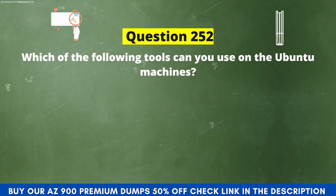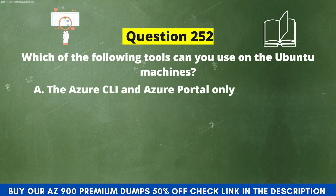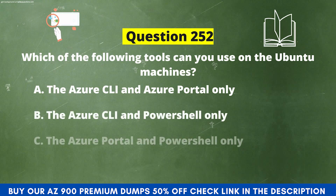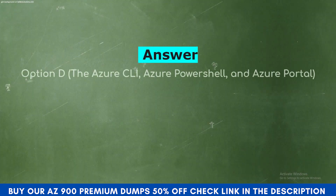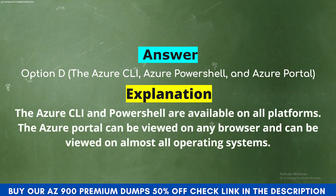Next question. Which of the following tools can you use on Ubuntu machines? Option A: The Azure CLI and Azure Portal only. Option B: The Azure CLI and PowerShell only. Option C: The Azure Portal and PowerShell only. Option D: The Azure CLI, Azure PowerShell, and Azure Portal. The correct answer is Option D. Explanation. The Azure CLI and PowerShell are available on all platforms. The Azure Portal can be viewed on any browser and can be viewed on almost all operating systems.